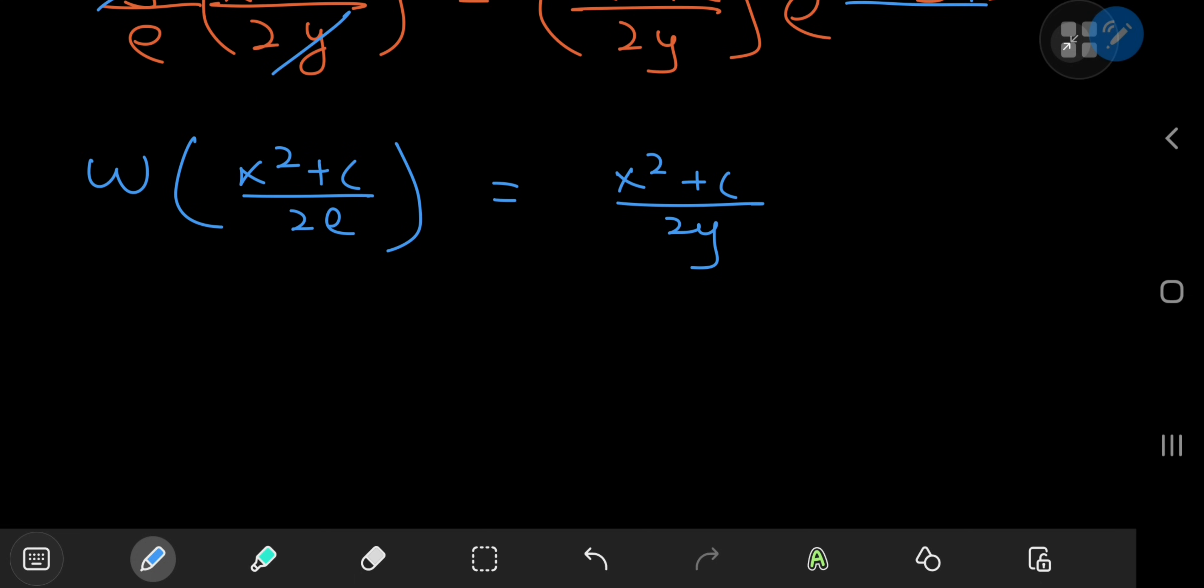That does look pretty cool and notice that you can isolate the y variable pretty easily now. So this implies that y equals (x squared plus c) divided by 2 times Lambert W of (x squared plus c) divided by 2e, which is a pretty cool result indeed.